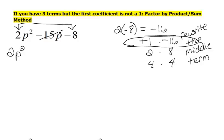but instead of negative 15p, I'm going to rewrite it using these numbers. I'm going to rewrite it as plus 1p minus 16p, and then our minus 8.